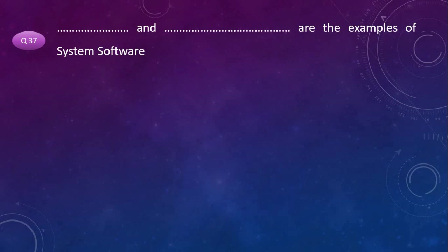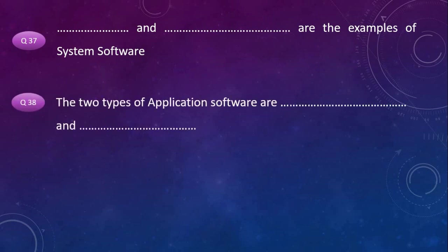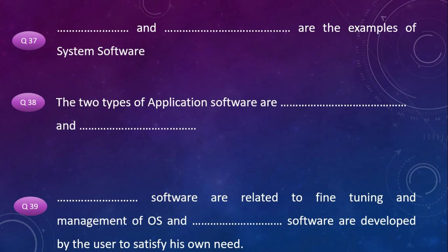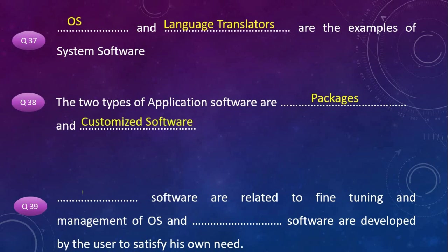Operating system (OS) and language translators are examples of system software. The two types of application software are packages and customized software. Utility software is related to fine tuning and management of the operating system. Customized software is developed by the user to satisfy their own needs.